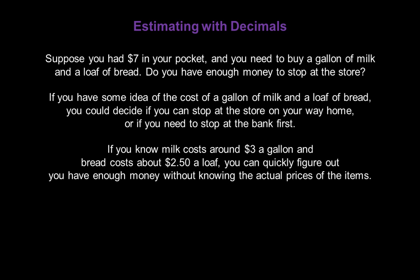If you know milk costs around $3 a gallon, and bread costs about $2.50 a loaf, you can quickly figure out you have enough money without knowing the actual prices of the items. You only need around $5 or $6, so $7 will cover the cost. That's an estimation.